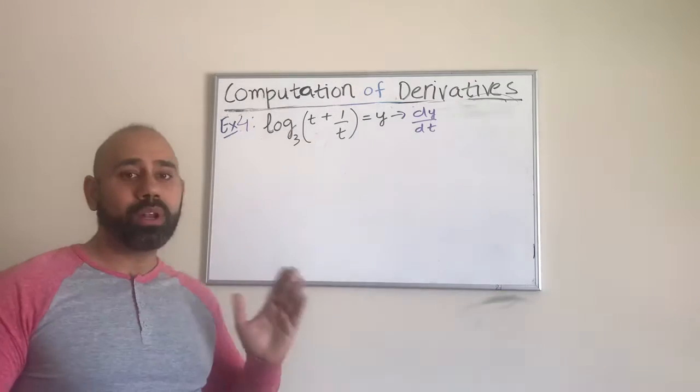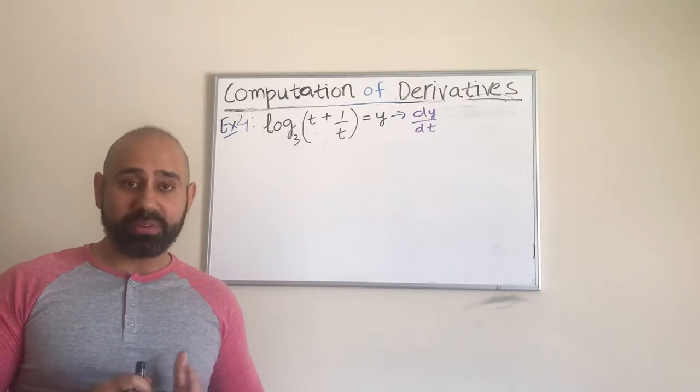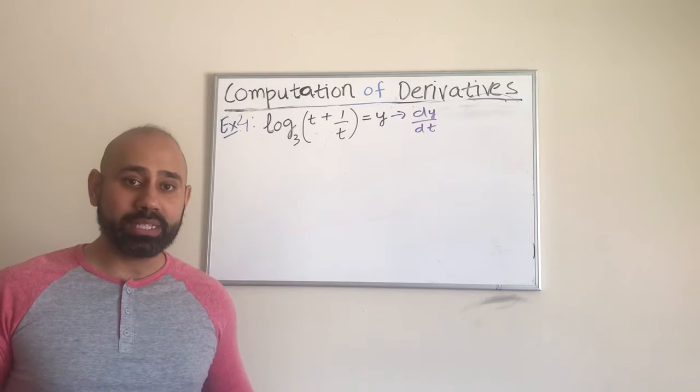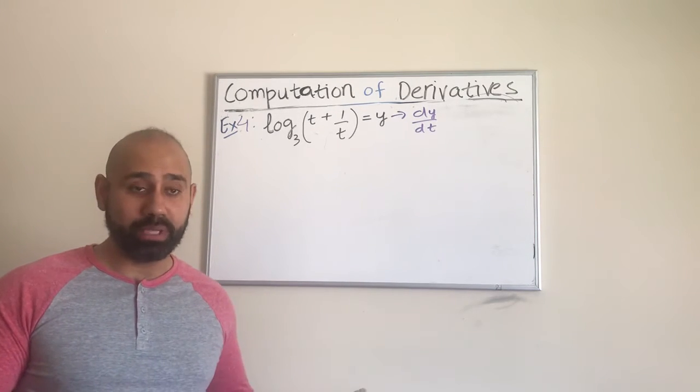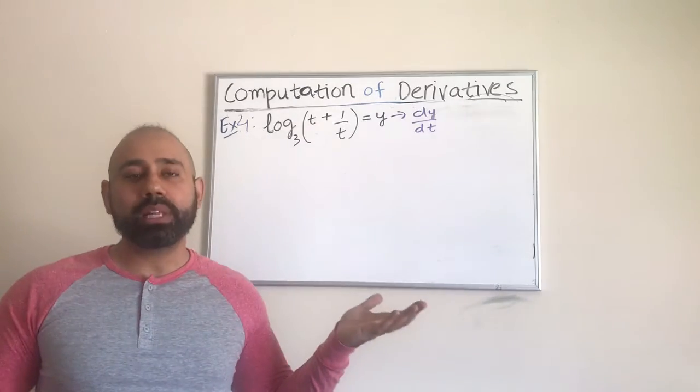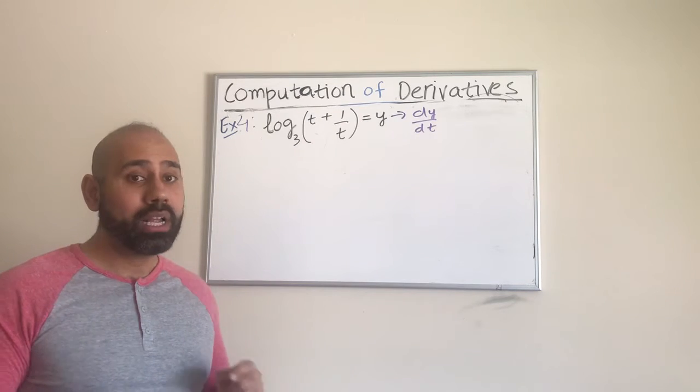Just looking at this function, first of all, we should ask ourselves, can I use any of the log properties to simplify this or to break it down into different pieces? Because that makes life easier, which we have already seen in my other examples. Now, looking at this, it seems like we cannot use any of the log properties.